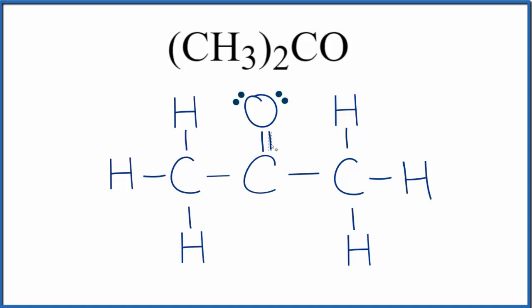Each one of these lines represents two valence electrons there in a chemical bond. And if you count these up, we have two, four, six, eight, ten, twelve, fourteen, sixteen, eighteen, twenty, twenty-two, twenty-four. So we have the correct number of valence electrons.